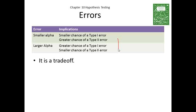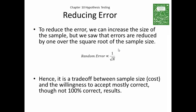Well, if you're going to have this problem, how do you reduce the chance of making errors? Sample size. And we touched upon this earlier as well. To reduce the error, we can increase the size of the sample. But we saw that errors are reduced by 1 over the square root of the sample size. So to reduce my chance of an error by a factor of 10, I have to increase my sample size by a factor of 100. That's kind of hard to do.